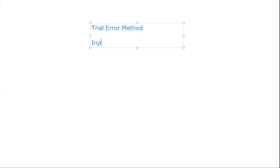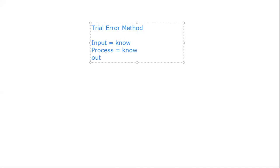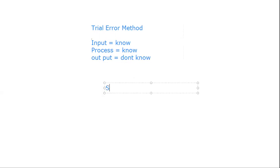In the trial-and-error method, they knew the input and they also knew the process, but they did not know about the output. So in the trial-and-error method, you know what the input is and what the process would be, but you do not know what the output will be.